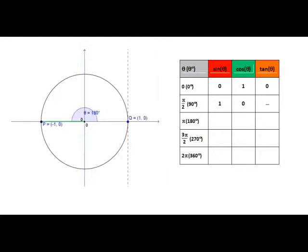Continuing our way around the circle, now at 180 degrees or pi radians, we can see that sine of 180 degrees or sin of pi is 0. Cos of 180 degrees or cos of pi is negative 1, and tan of 180 degrees or tan of pi is 0.